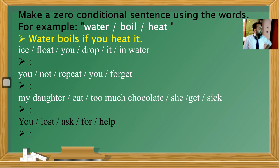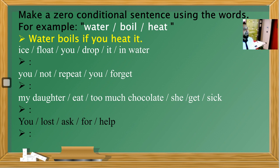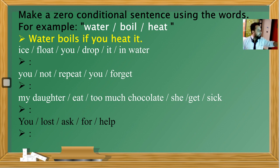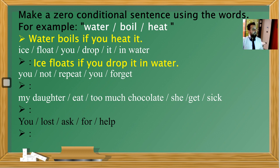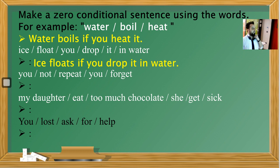Let's see some exercises. An example is given — the words water, boil, and heat. We put them in the correct order using an if clause: 'Water boils if you heat it.' For the second example, the words are ice, float, you, drop, eat, and in water. We make a condition: 'Ice floats if you drop it in water.' Eğer suyun içine buzu atarsan suyun üzerinde yüzer. Or: 'If you drop it in water, ice floats.'